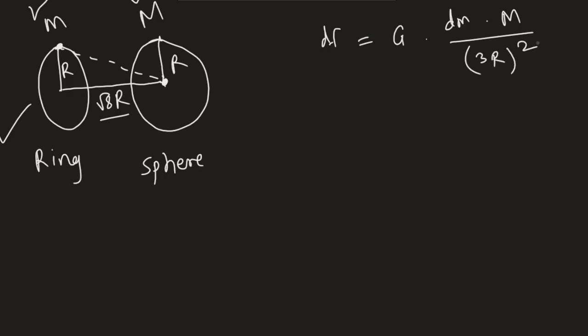Basically, we have to take the square of that. So that will be the small force between one particle on that ring and the center of the sphere.